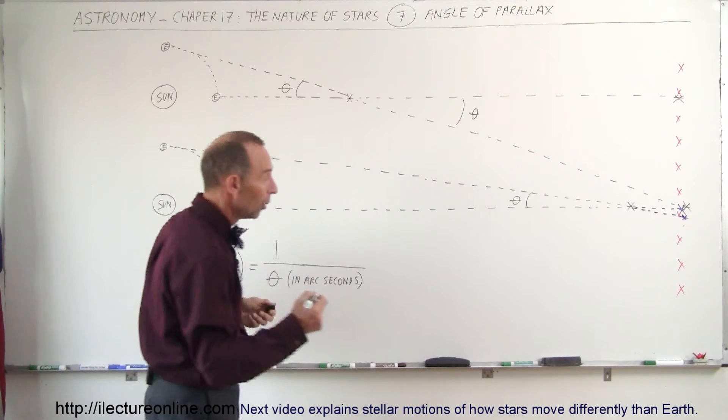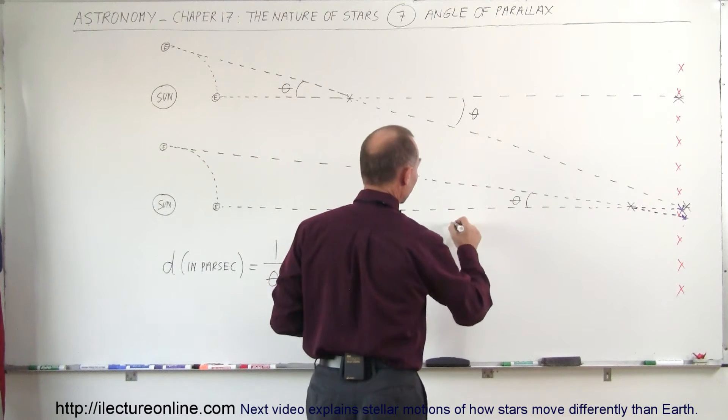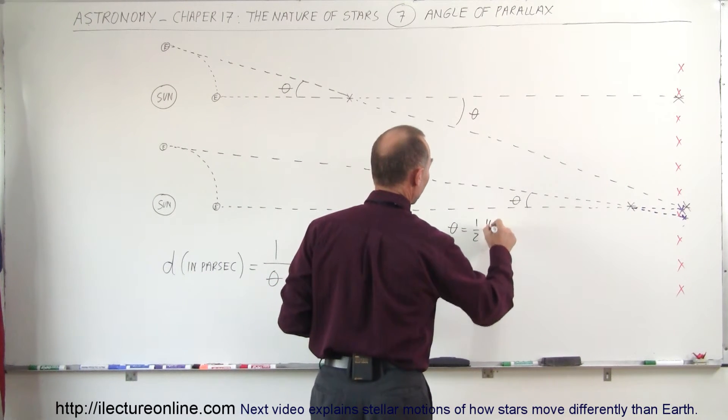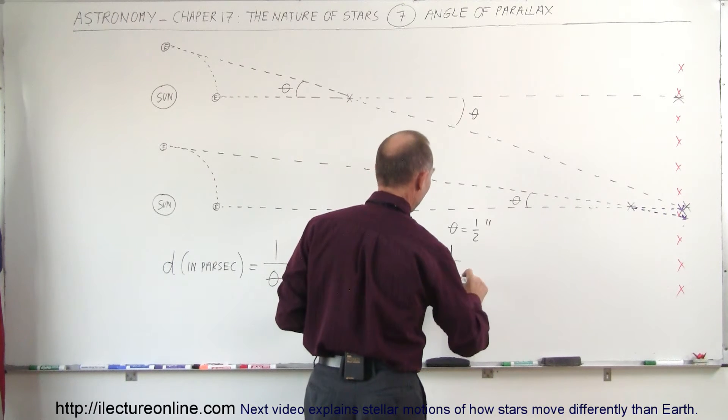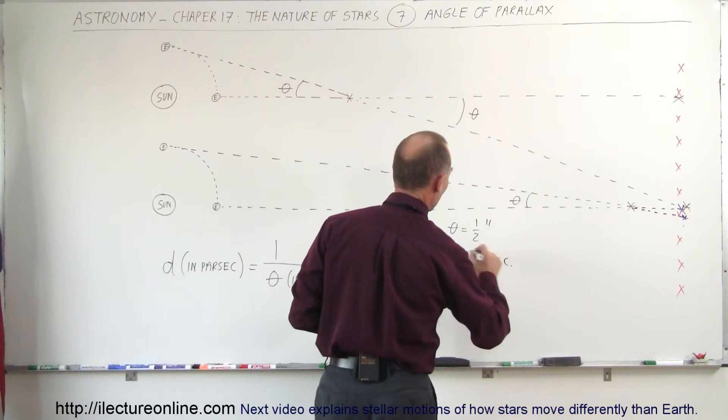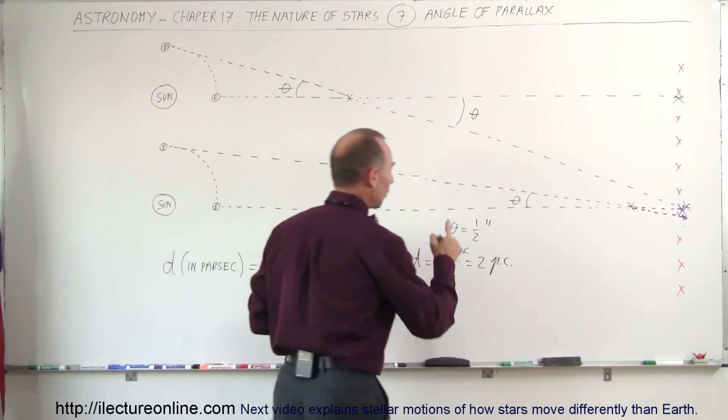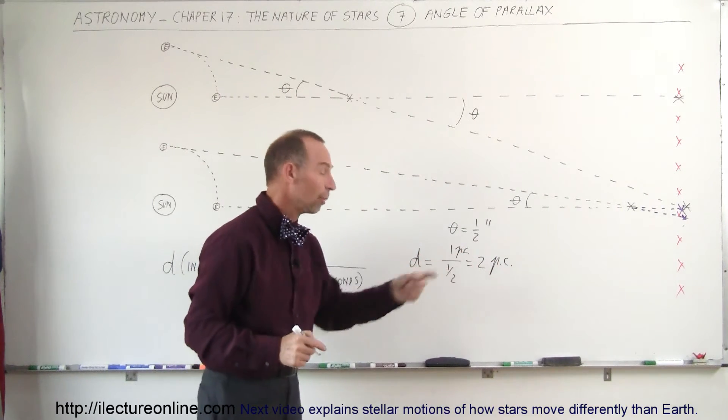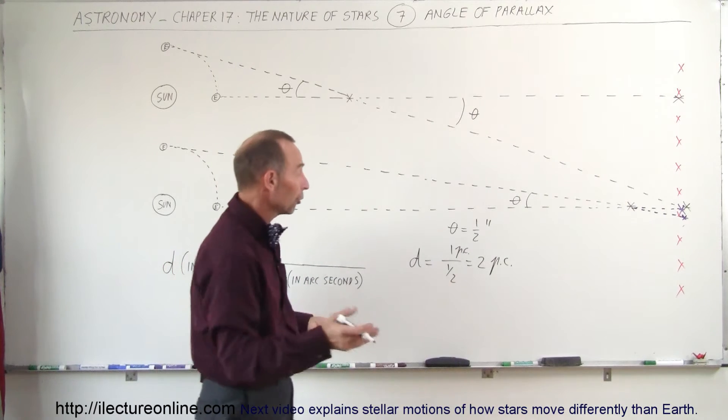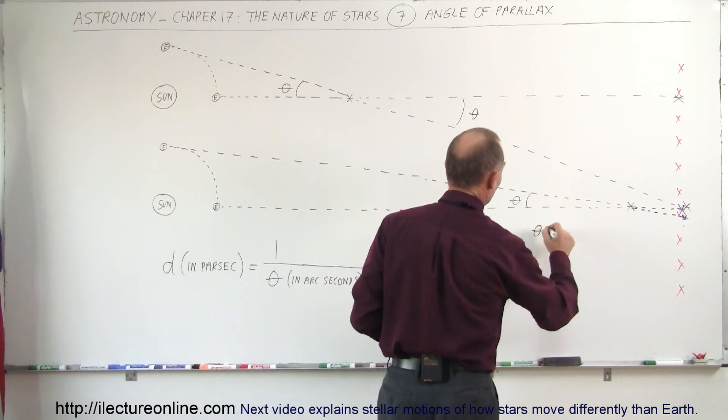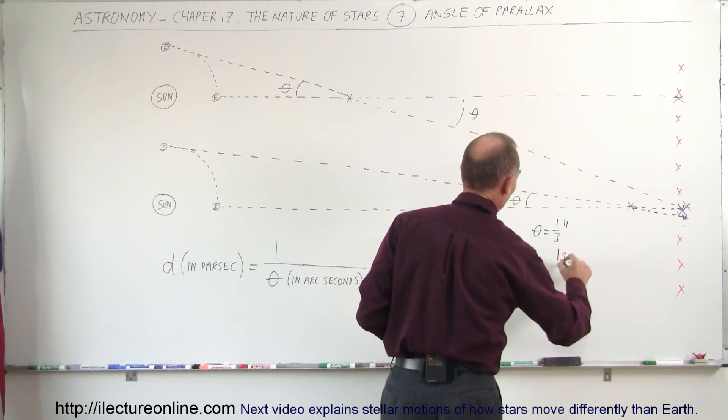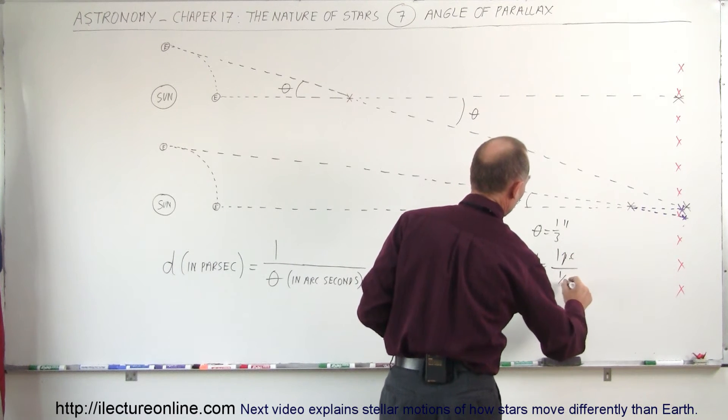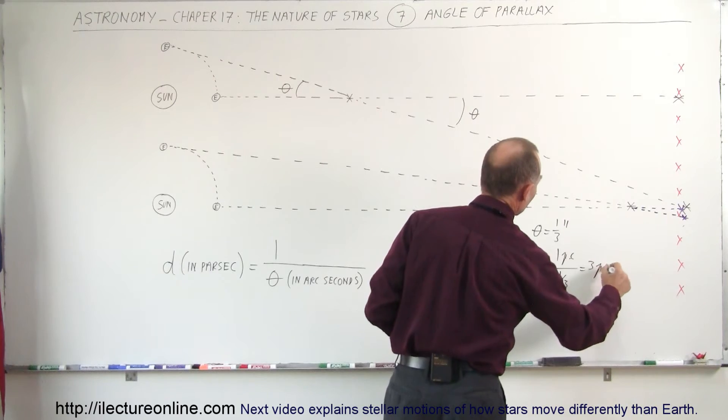Now, as an example, what if theta was equal to a half an arc second? Then you know that the distance is equal to one divided by one half, which is equal to two, and of course the units would be two parsecs. So it would be one parsec divided by one half, which is two parsecs. What if the angle was one third of an arc second? If the angle measured was equal to one third of an arc second, then the distance would be one parsec divided by one third, which is equal to three parsecs and so forth.